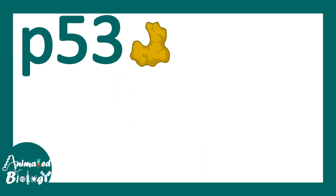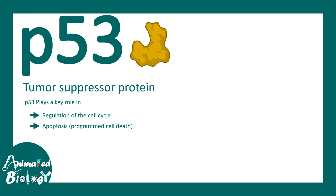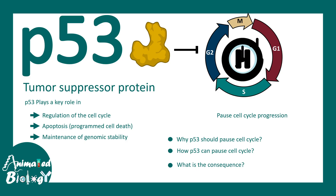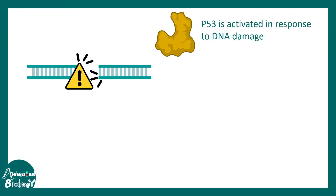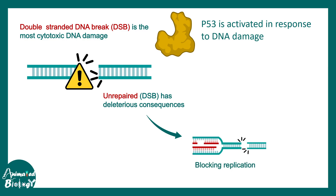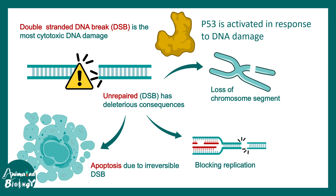Another tumor suppressor that modulates cyclin-CDK activity is P53, which plays a key role in cell cycle regulation, apoptosis, and maintenance of genomic stability. It can pause cell cycle progression in many ways. For example, if DNA damage occurs during G1 phase and is not repaired, there could be detrimental consequences — blockage of the replication fork, loss of a chromosome segment, or apoptosis. Specific sensors known as ATM and ATR bind to and sense the DNA damage, and through downstream signaling involving CHK2, P53 gets activated.